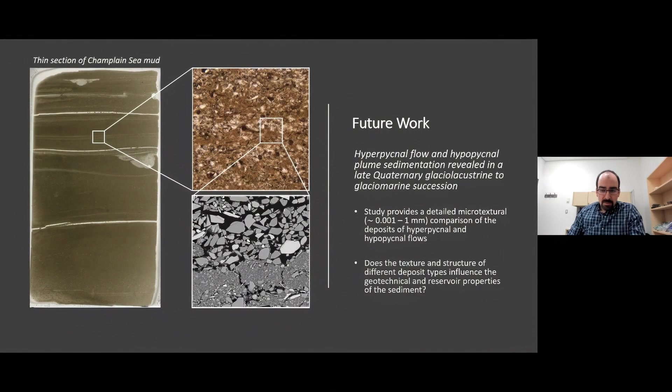Just to conclude, we have one minute left. Future work, the plans for the remainder of this year, are to work on this study, which is a comparison of the microtextural characteristics of hyperpycnal flow and hypopycnal plumes, both of which are types of density currents. One is a bottom-hugging density current, one is a positively buoyant plume. The purpose of the study is to provide a direct comparison of the deposits of these two types of flow types from the thin section to the optical microscope to the SEM scales, and to potentially address the question: does the texture and structure of these different deposit types influence the geotechnical and reservoir properties of the sediment? Thank you all very much for your time.